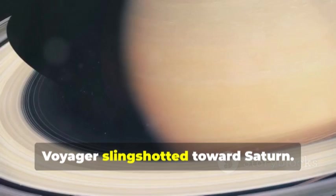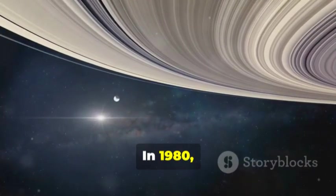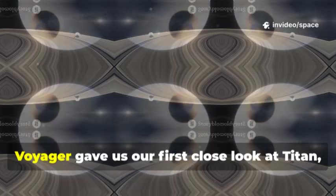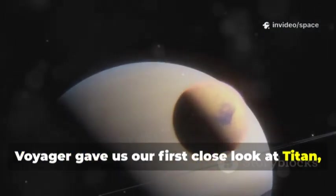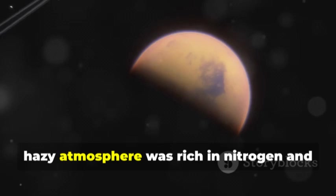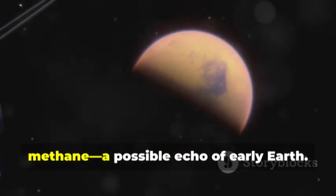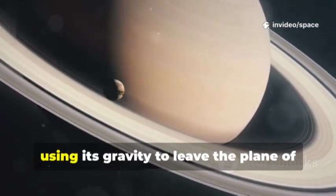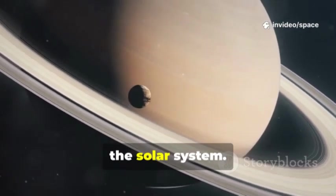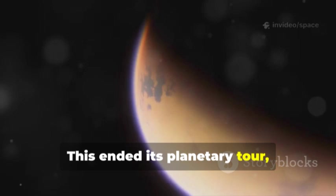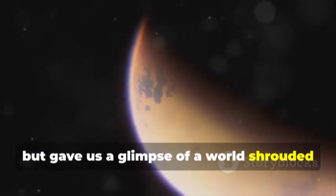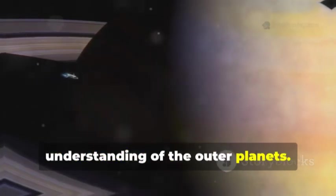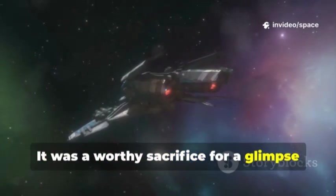After Jupiter, Voyager slingshotted toward Saturn. In 1980, it revealed Saturn's rings as thousands of ringlets shaped by tiny moons. Voyager gave us our first close look at Titan, Saturn's largest moon. Titan's thick hazy atmosphere was rich in nitrogen and methane, a possible echo of early Earth. To study Titan, Voyager flew close, using its gravity to leave the plane of the solar system.